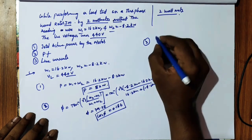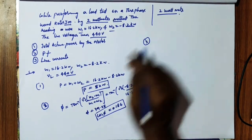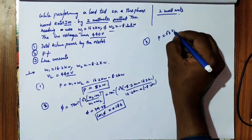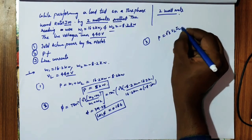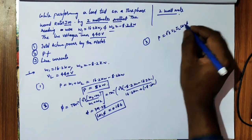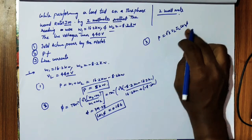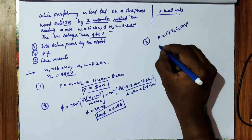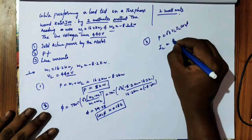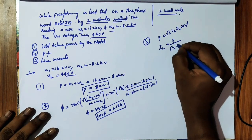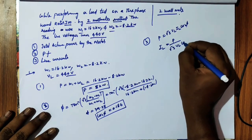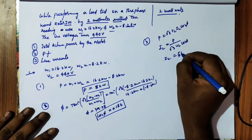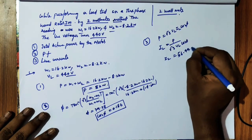The question also asks for the line current. Using the formula P = √3 × VL × IL × cos(phi), we can find the line current: IL = P divided by (√3 × VL × cos(phi)). Substituting the known values gives IL = 56.44 amps.